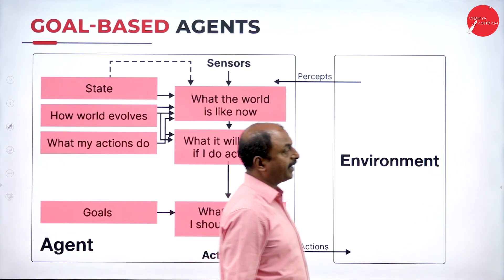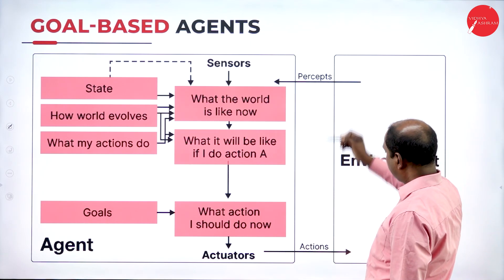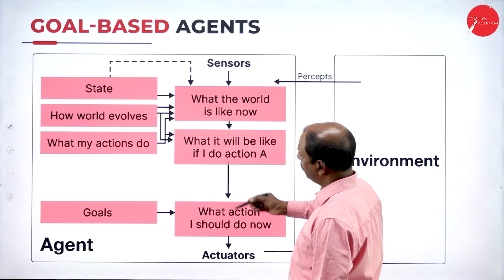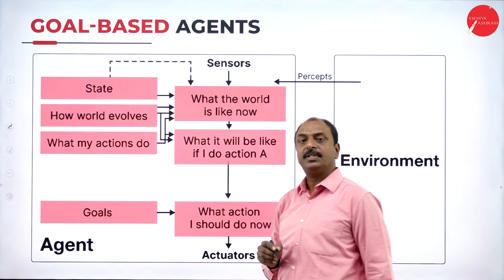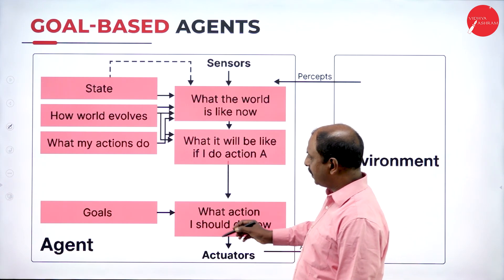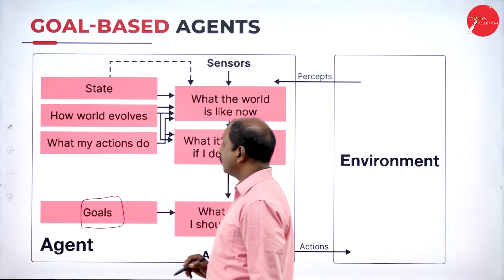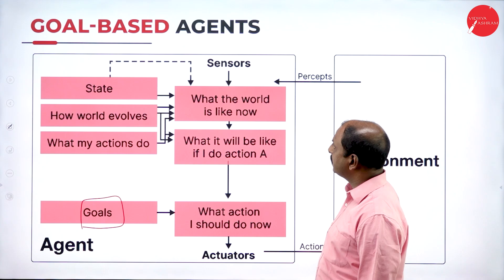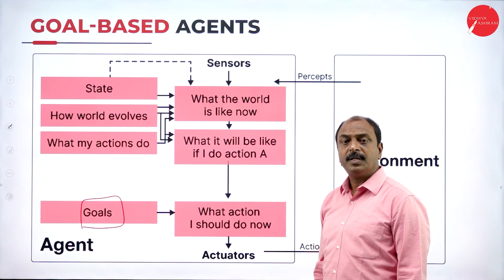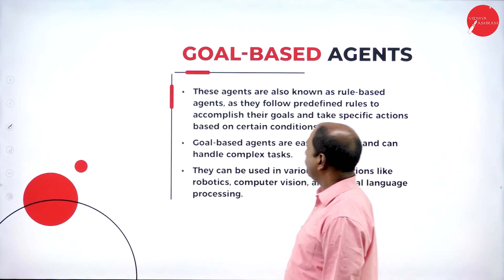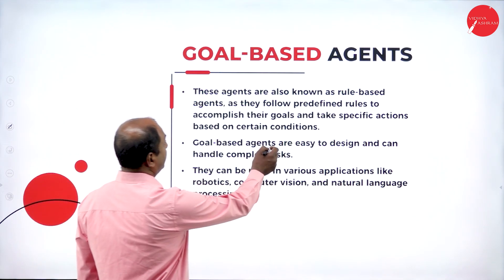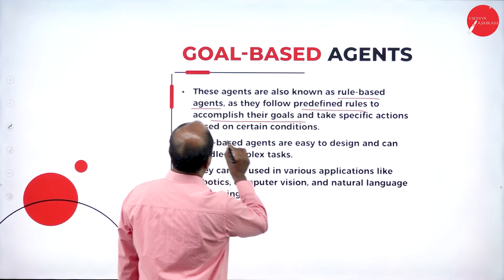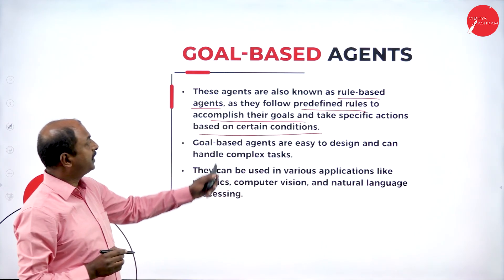Looking at the diagram, this is the environment, percepts, actions, and an agent with different components including sensors, the decision algorithm, and the state. Comparing this with the model based agent, there is a component called goals instead of models — that is one key difference in the diagram of goal based agent versus model based reflex agent. These agents are also known as rule based agents, as they follow predefined rules to accomplish their goals and take specific actions based on certain conditions.